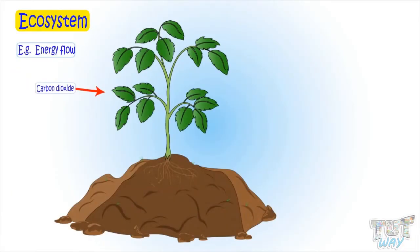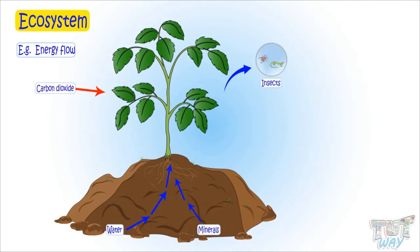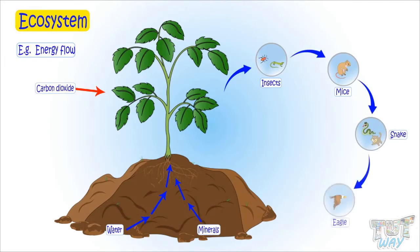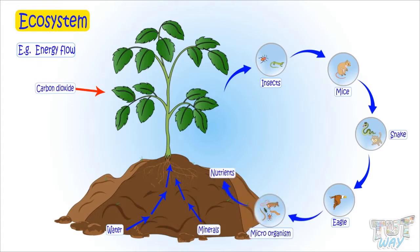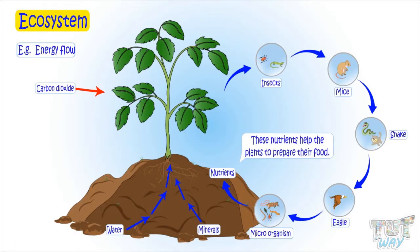Let's try the energy flow with an example. Plants use carbon dioxide from the air, and water and minerals from the soil, along with sunlight. Insects eat plants, and mice eat insects. Snakes and cats eat mice. Snakes are eaten by eagles. And when all of these living things die, they are broken down into nutrients by fungi and get dissolved in soil. These nutrients are again used by plants to prepare food in the presence of sunlight. So this is the way energy flows in an ecosystem.